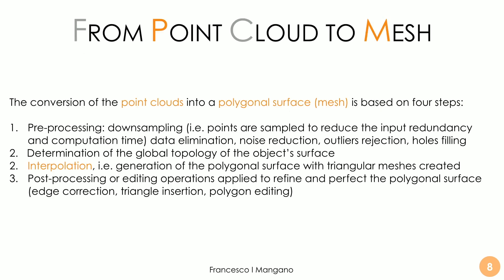Here we have essentially three steps that help us understand the conversion of point clouds into a polygonal mesh based on triangles. First, there is preprocessing — down-sampling: the large number of original points needs to be reduced to avoid redundancy and reduce computation time, eliminating noise and outlier data.